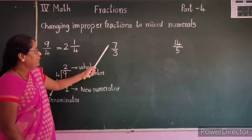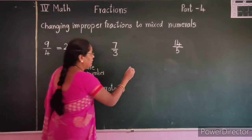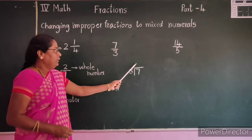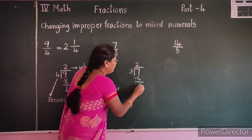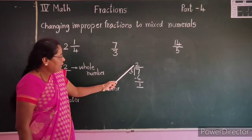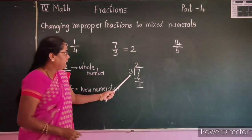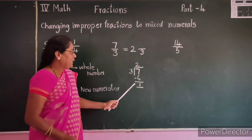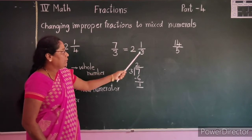Let's see one more example: 7 by 3. Divide 7 by 3. 3 times 2 is 6, so 7 minus 6 equals 1. The quotient is 2, which is the whole number. The denominator remains the same — that is 3. The remainder 1 is the new numerator. So 7 by 3 is equal to 2 and 1 by 3, where 2 is the whole number.